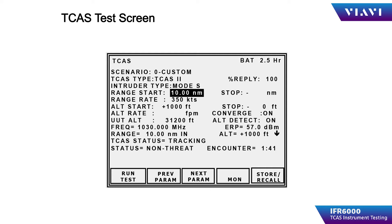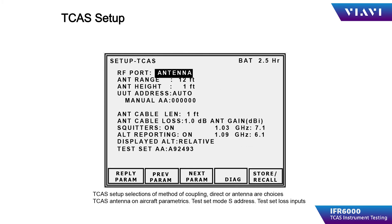The operation screen also provides the basic measurements of the TCAS being tested, such as frequency, power level, and whether the target is being tracked. Pressing the next parameter or previous parameter soft key will move the cursor to the next or previous operator input.